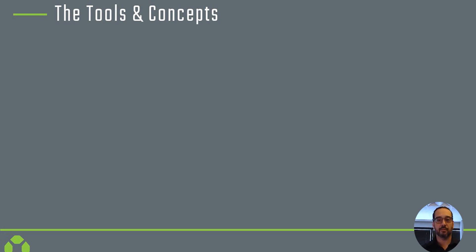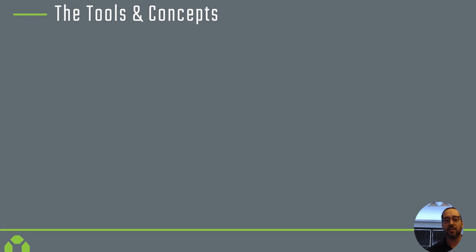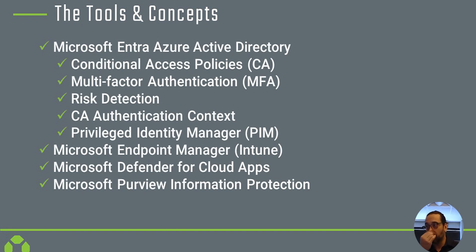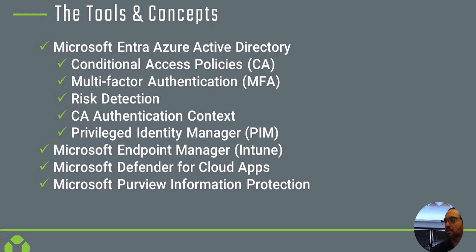Now let's talk about building a zero trust infrastructure with Microsoft tools. We're not going too in-depth on slides because I want to get to the demo — that's where the meat of the presentation is. The tools include Azure Active Directory with conditional access policies, multi-factor authentication, risk detection, conditional access authentication context, and Privileged Identity Manager. We'll also use Microsoft Endpoint Manager Intune, Defender for Cloud Apps, and Purview Information Protection.